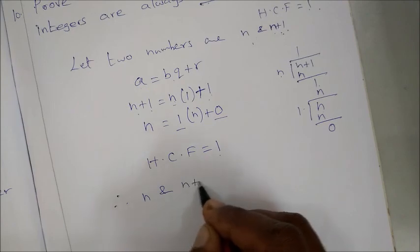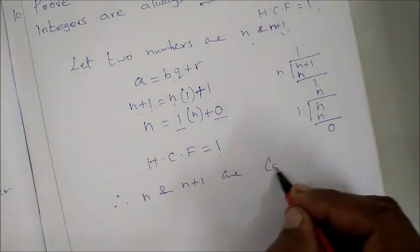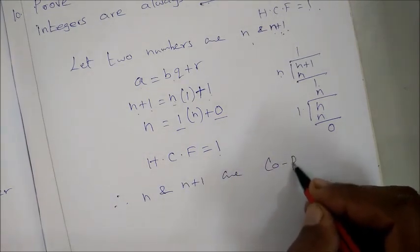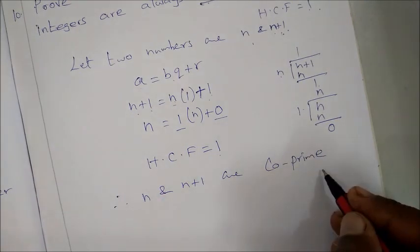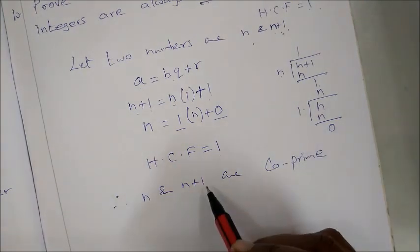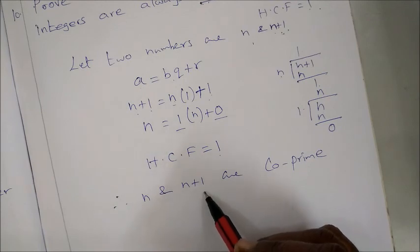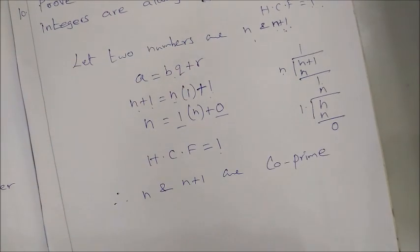Since HCF is 1, n and n plus 1 are co-prime. n and n plus 1 are two consecutive positive integers. That's all, thank you.